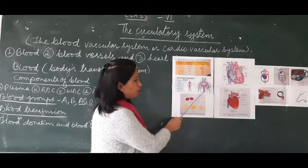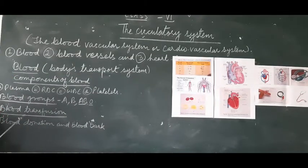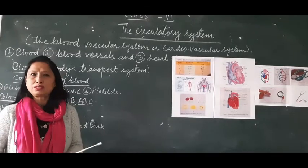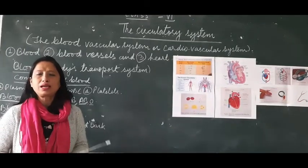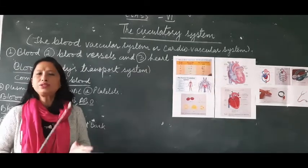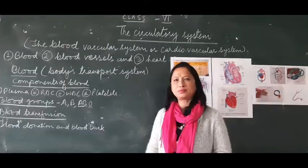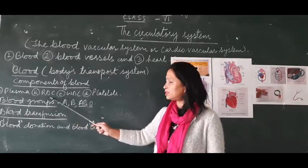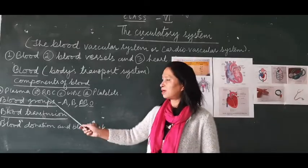Blood that flows through the blood vessels transports gases, nutrients, and wastes from one part of the body to another. That's why the circulatory system is also called the body's transport system. Blood is made up of four components: plasma, RBC, WBC, and platelets.